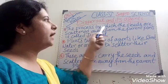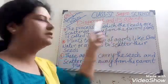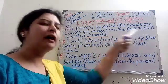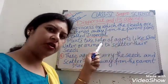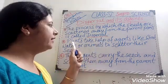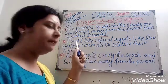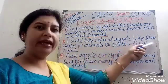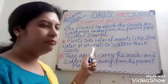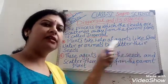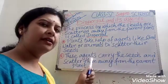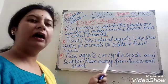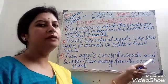The process by which the seeds are scattered away from the parent plants is called dispersal. For example, parent plants take help of agents like wind, water, or animals to scatter their seeds. These agents carry the seeds and scatter them away from the parent plants.